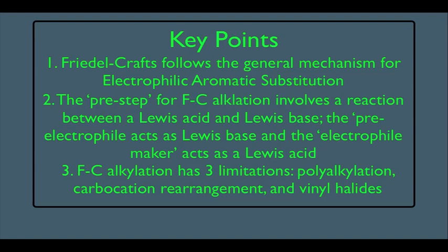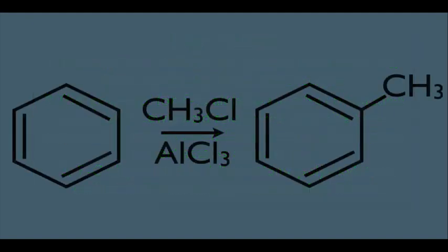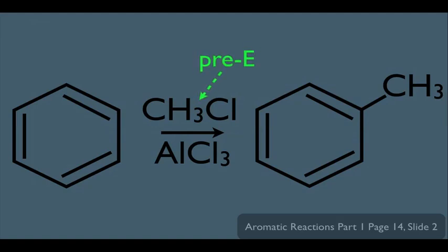Number three, Friedel-Crafts alkylation has three limitations: polyalkylation, carbocation rearrangement, and vinyl halides. These are the reagents. Notice this is playing the role as our pre-electrophile. We have our electrophile maker, which is the same one used in Friedel-Crafts acylation, and we end up with this as our electrophile added to the benzene ring. Notice in this reaction, we're adding an alkyl halide instead of an acyl chloride — that's why this is called Friedel-Crafts alkylation.